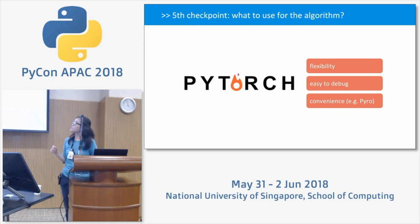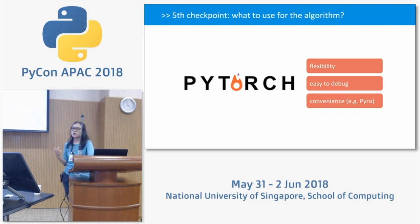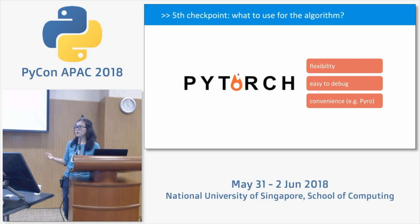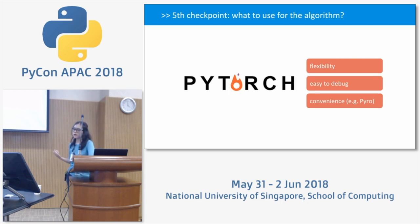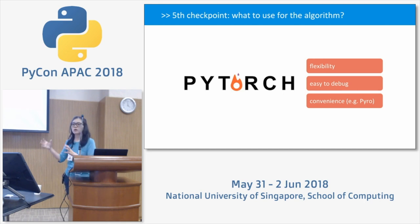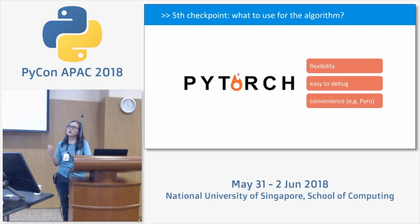For the algorithm implementation we use PyTorch because this is an initial study requiring lots of testing. PyTorch offers flexibility, is easy to debug, and is convenient — especially for Pyro. When you want a Bayesian mechanism in your algorithm, having Pyro in your library is very convenient because it allows exploration of probabilistic programming in neural networks.